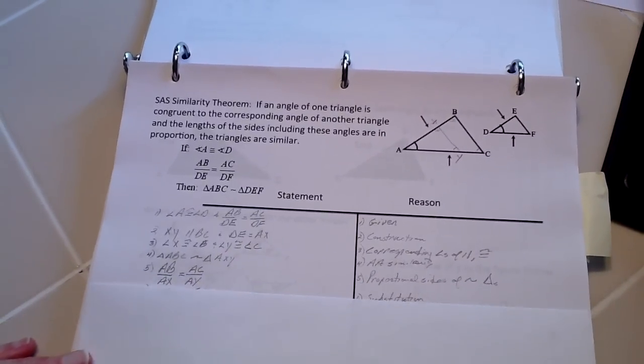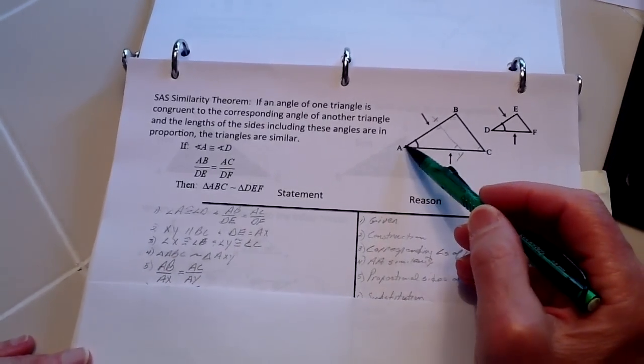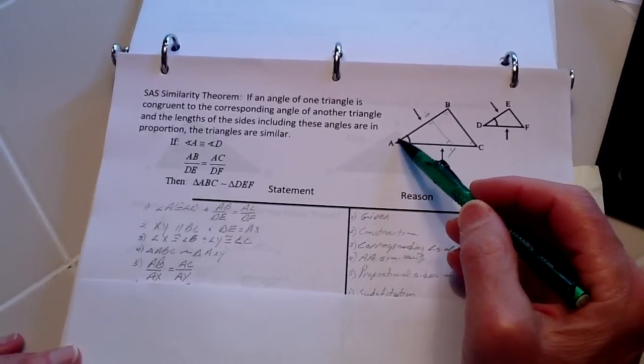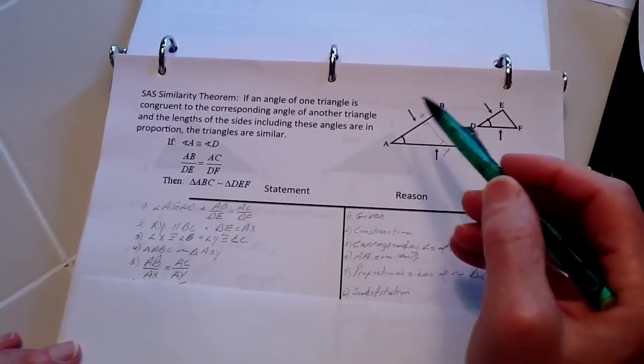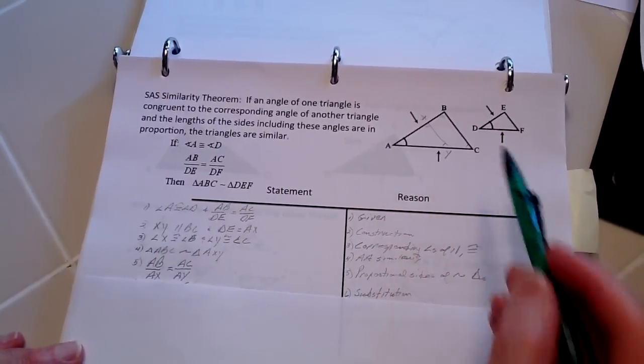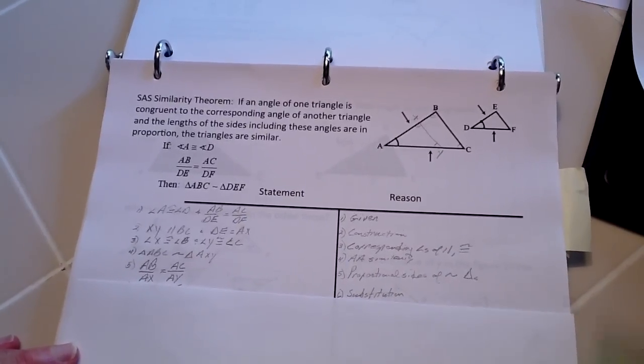From that, we know that proportionally, AB to AX is going to be the same relationship as AC to AY. And that's because of proportional sides of similar triangles.